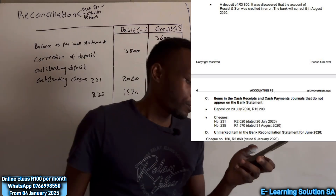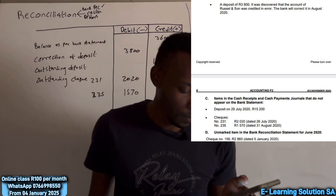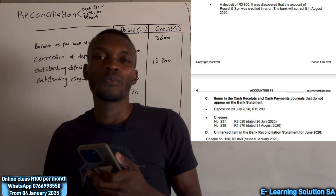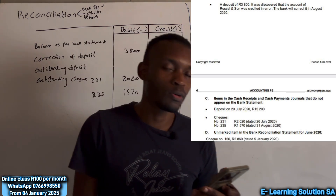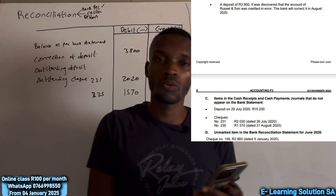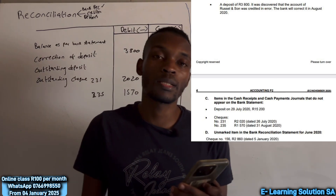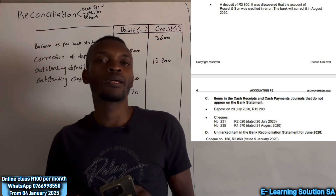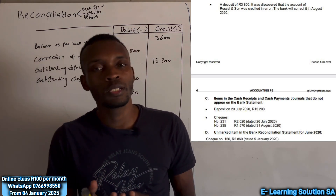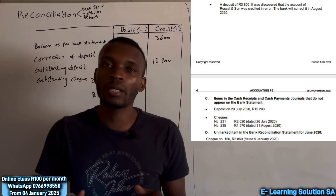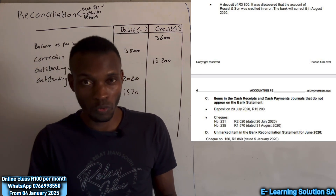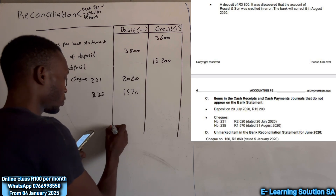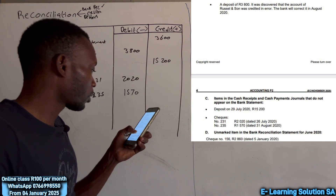Item D shows an unmarked item on the bank reconciliation statement for June 2020: check number 156, dated 5 January. If you count from 5 January until July, this check is already outdated — it is more than six months old. So we are not going to record it anymore; it must be cancelled under the cash receipt journal and reversed so that a new check can be issued. Just like an expired voucher, this check can no longer be redeemed.